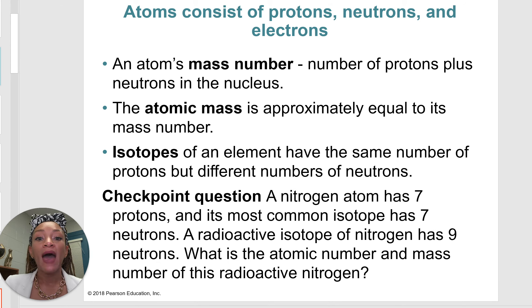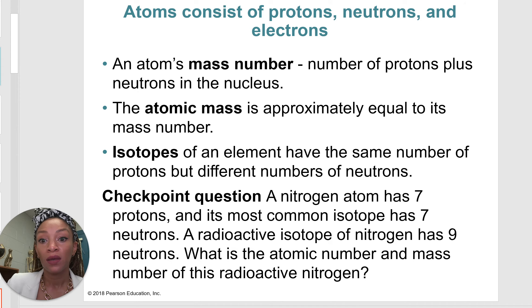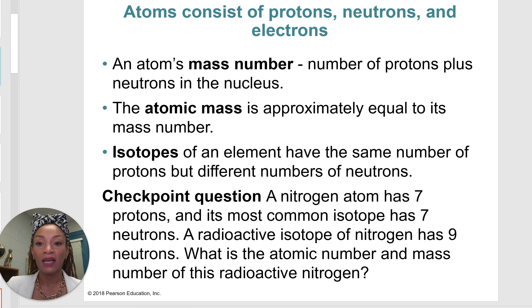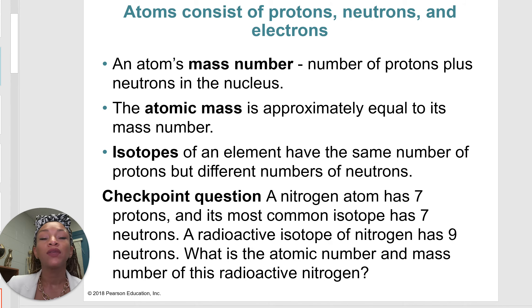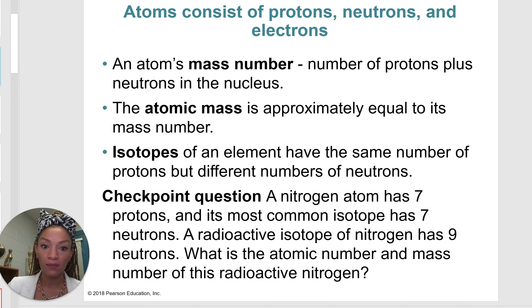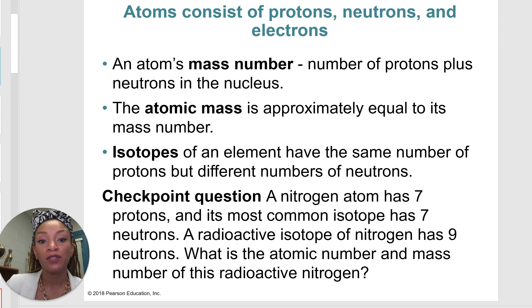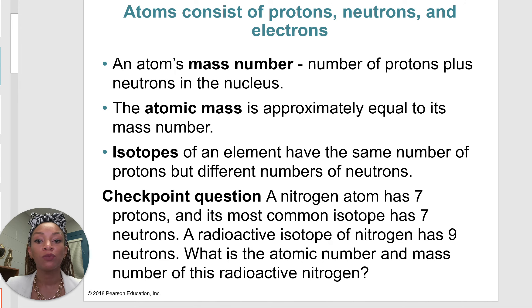An atom's mass number is the number of protons plus the number of neutrons found in the nucleus. The atomic mass is approximately equal to its mass number. Something that varies between atoms are isotopes — an element will have the same number of protons, but the number of neutrons will vary. For example, a nitrogen atom has seven protons, and its most common isotope has seven neutrons, giving a mass number of 14.